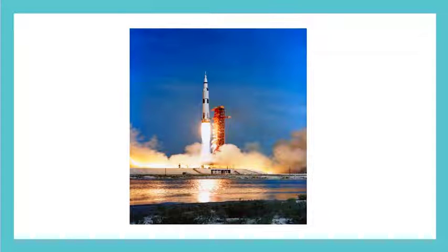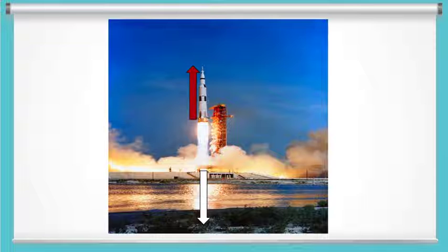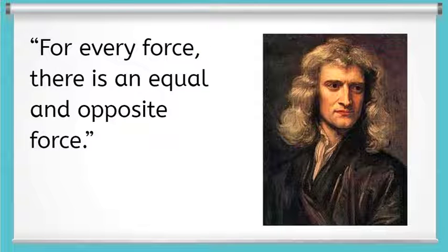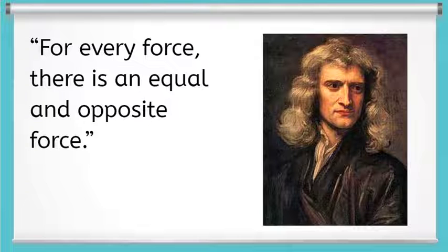Remember, we used action-reaction pairs to explain how a space shuttle takes off. We said the downward force of the fuel exhaust exerts on the ground is met with an upward force that the ground pushes up on the fuel exhaust, and that's what gives the spacecraft an unbalanced force so it can take off. So that's what action-reaction force pairs are, the equal and opposite forces.